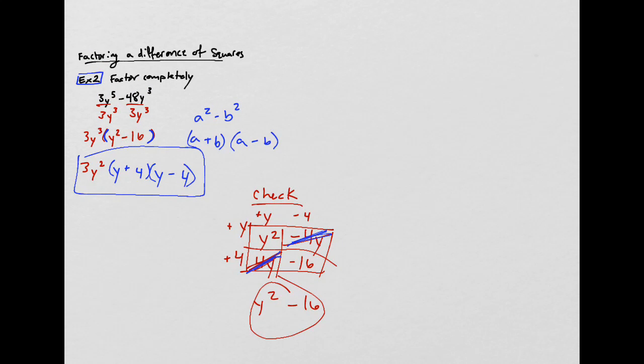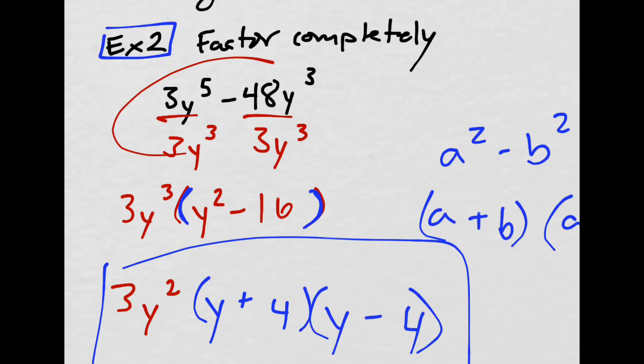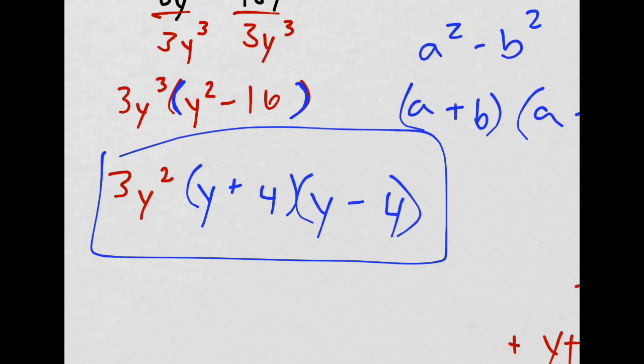So that's the difference of squares. You first try and factor out a greatest common factor, that's dividing by what's in common. And then if you have a perfect square here and a perfect square here and a subtraction, then you've got a difference of squares. You can just immediately take the square roots and jump to the answer.